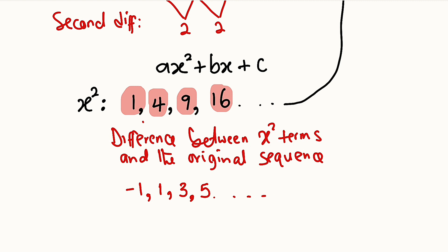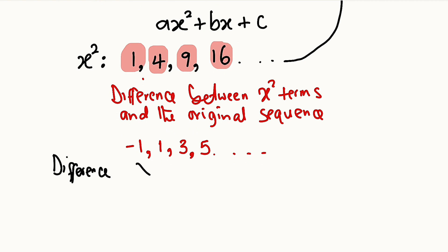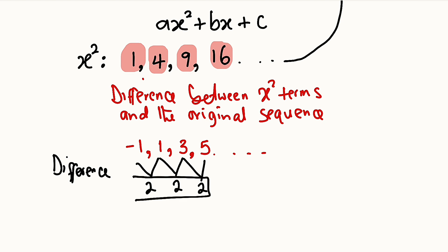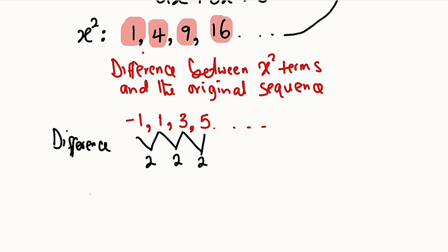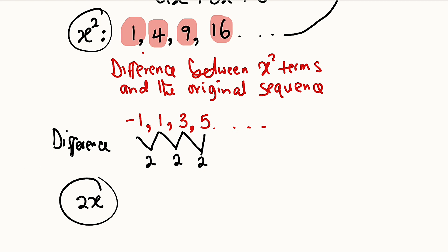We take the differences of this new sequence: from −1 to 1 we add 2, from 1 to 3 we add 2, from 3 to 5 we add 2. We have a constant common difference of 2, therefore 2 is the coefficient of our middle term x. So we have 2x. We now have x² and 2x; all we need to find next is the constant.